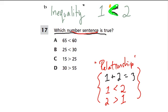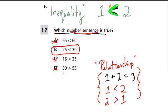Which of these make sense? The first one's not right, because look at our alligator — it's eating 60. But alligators wouldn't eat the smaller number, and 60 is smaller than 65, so this one is not true. The next one does make sense, because the alligator is eating 30, which is more than 25 — so this is true. 15 is not bigger than 25, so our alligator wouldn't face open to 15. And the last one's also out, because 30 is smaller than 55.